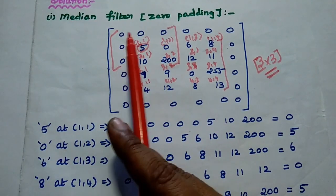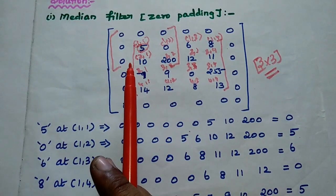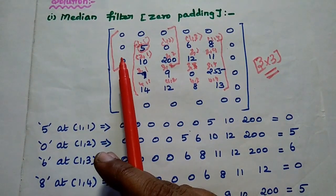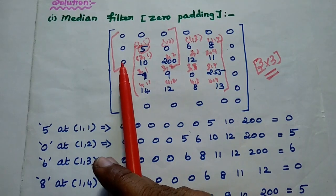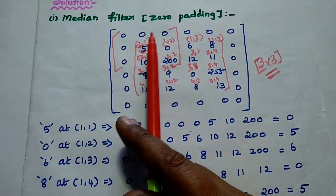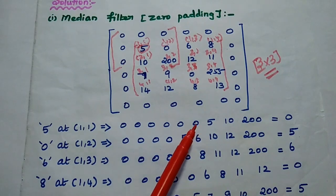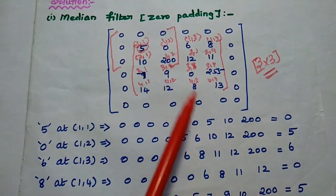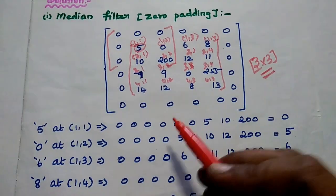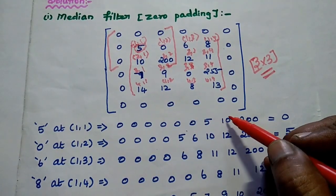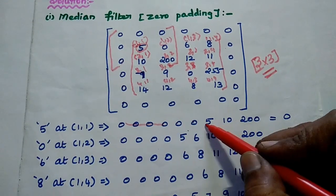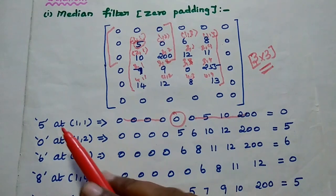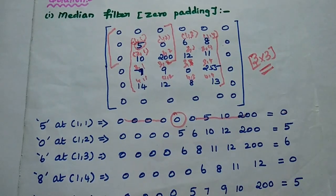We can take this neighboring pixels alone. In this segment we are going to write down the values in ascending order. How many zeros are there? 6 zeros — we need to write all of them. Next highest value is 5, then 10, then 200. So here there are 9 values total. The first 4 we ignore and the last 4 we ignore. What is the median value? The center one is 0. So the pixel value 5 can be replaced with the value 0 in the final answer.